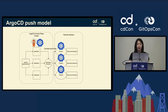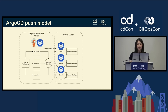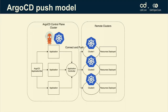As of today, Argo CD mostly uses a push model, which is quite simple. On your hub cluster, you have your Argo CD operator and it creates an application set that generates a set of applications. The Argo CD application controller then connects to the remote cluster and deploys the resources from the application to the remote clusters — it's just one way, from the hub to the managed clusters.